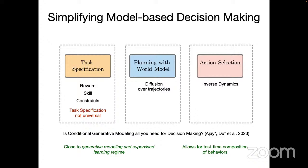One thing we really like about generative models is that they can be used for many tasks — like a large language model used for searching, coding, or text revision. But the model described is still not that universal: it relies on a specific state space for diffusion over trajectories and requires explicitly gathered data for reward, skill, and constraints. This approach is still a bit far from an agent that can do a wide variety of things.